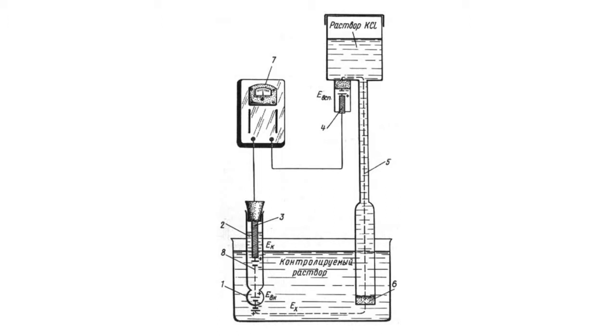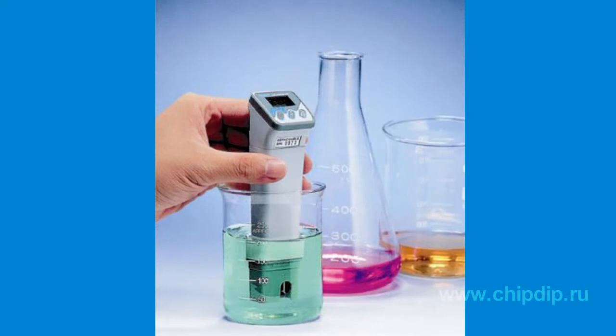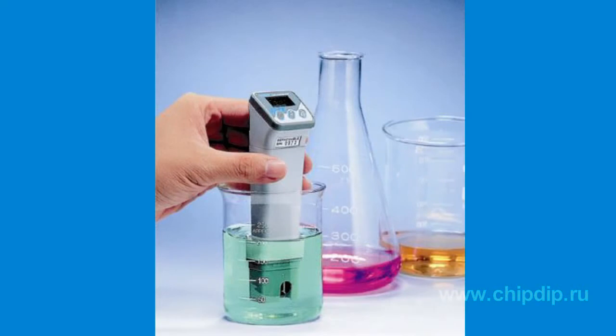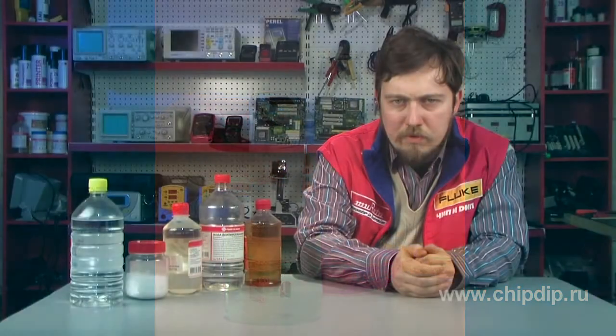Since the EMF depends on the pH of the solution, the device scale is graded in pH units. This is the most accurate and universal method for pH measurements, well suited for cloudy and colored solutions.